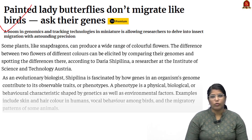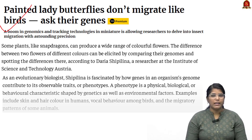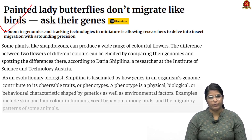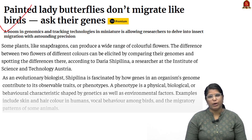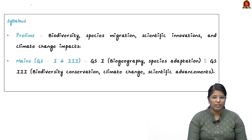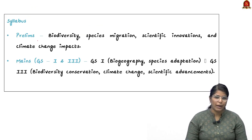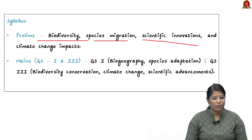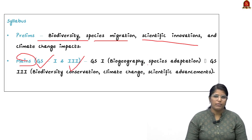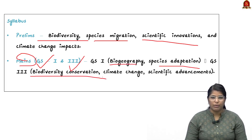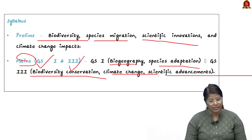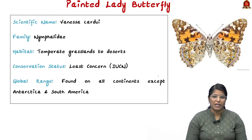This article talks about painted lady butterflies. They are currently in news because a team has made a study on the migratory pattern of this species and identified certain key important findings. From the prelims perspective, this will be asked under biodiversity, species migrations, scientific innovation, and climate change impacts. In mains, it falls under GS Paper 1 — biogeography and species adaptation — and GS Paper 3 — biodiversity conservation, climate change, and scientific advancements.